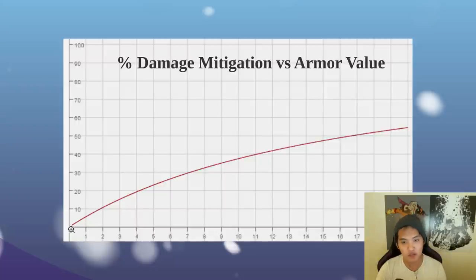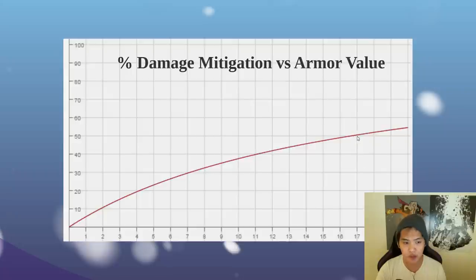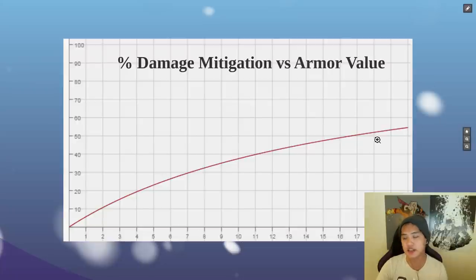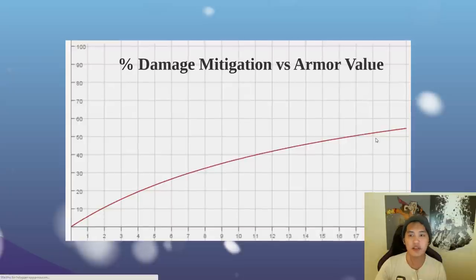Zero armor equals zero damage mitigation, four armor is around 20% damage mitigation, and at 17 armor you have 50% damage mitigation. Here's a simple graph that shows your damage mitigation on the y-axis and armor value on the x-axis — you can imagine the red line as it goes further and further to the right.